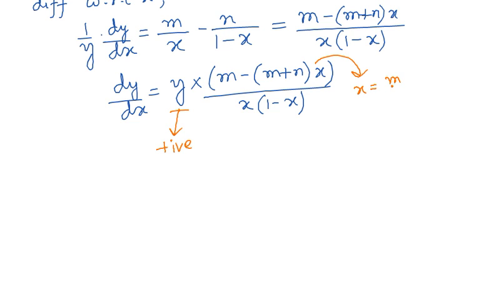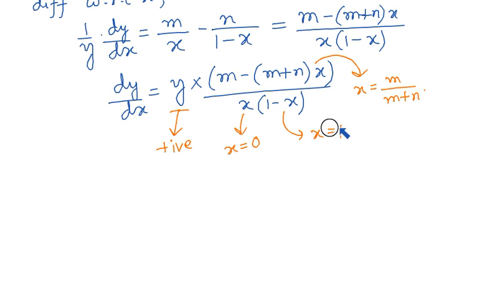The numerator factor vanishes at x = m/(m+n). The denominator factors vanish at x = 0 and x = 1. At x = 0 and x = 1, dy/dx will not be defined, but we can analyze dy/dx in the neighborhood of these points.